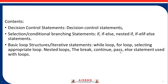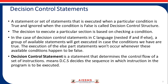The Decision Control Statement has three types: Selection or Conditional Branching Statement, which includes if, if-else, nested if, and if-else-if. Then basic loop structure — the iterative statement — including while loop, for loop, selecting appropriate loop, nested loop, and the break, continue, pass, and else statements, as well as loop with loops.